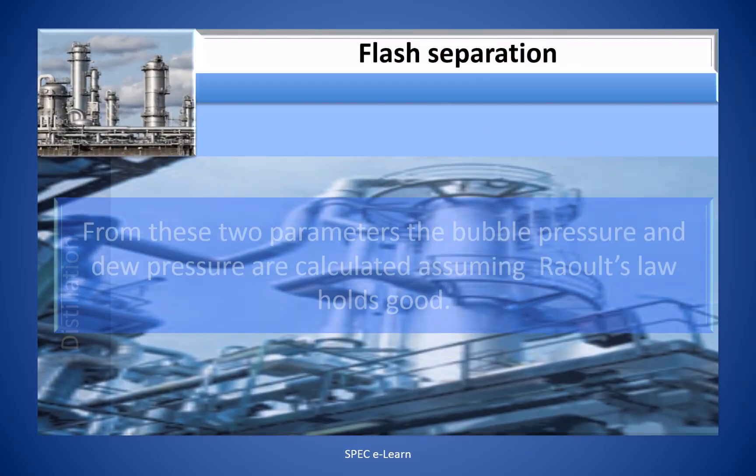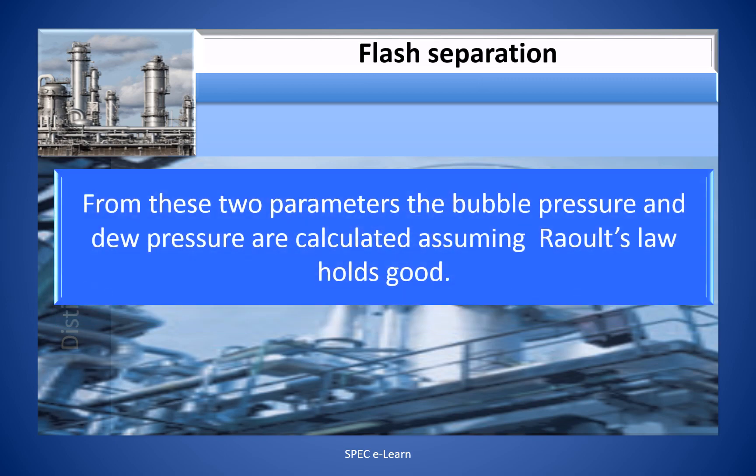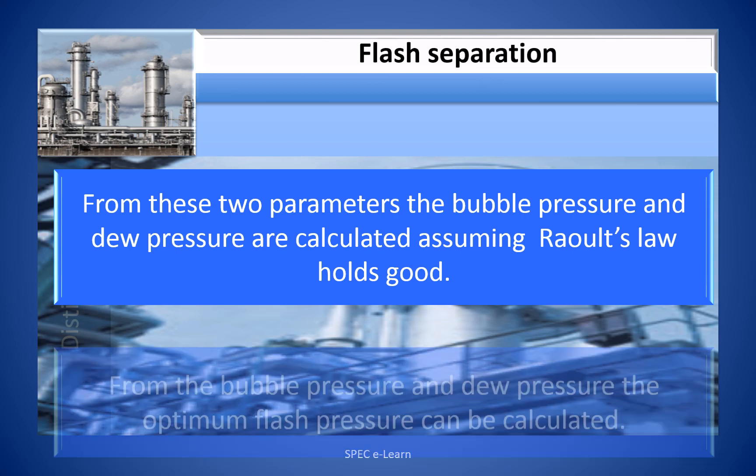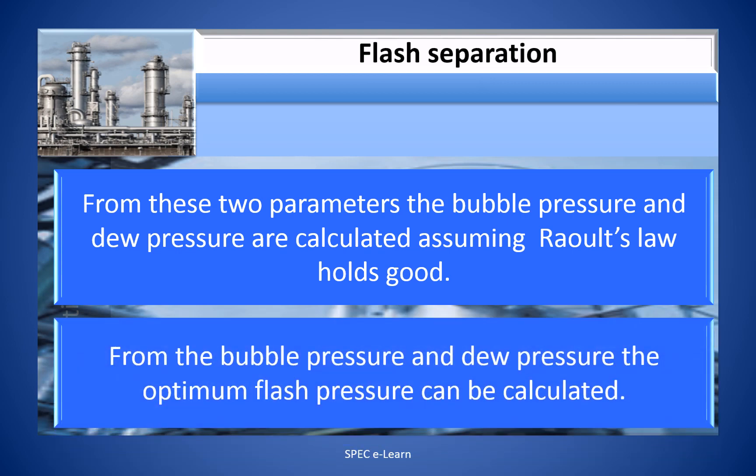From these two parameters, the bubble pressure and dew pressure are calculated assuming Raoult's law holds good. From the bubble pressure and dew pressure, the optimum flash pressure can be calculated.